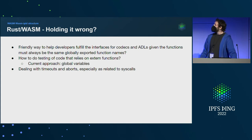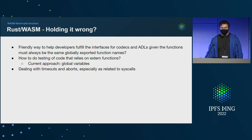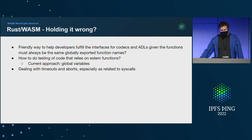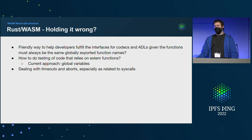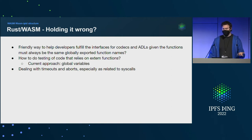Maybe I'm holding it wrong. I wrote zero Rust code and zero WebAssembly things up until a few months ago, so most of you in the room know this better than me. If you want this stuff to work, your help is needed — grow this together. Examples like how to make this easy for developers to work with, how to fulfill the contracts for codecs and ADLs when you don't have interfaces but global functions with specific names as required by WebAssembly exports — how do I do any testing that relies on extern functions? I have a terrible global map I'm using. Surely there's something better.